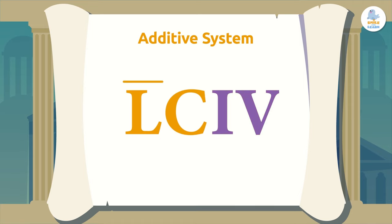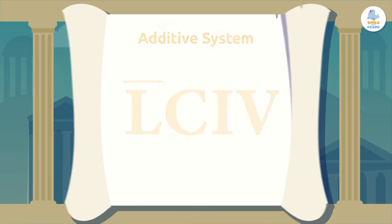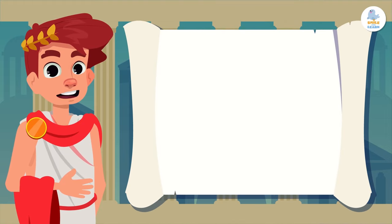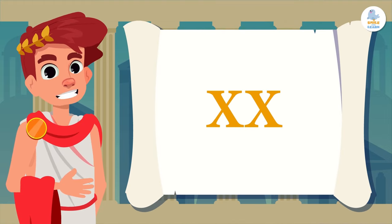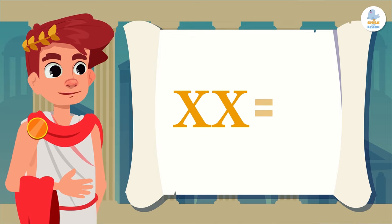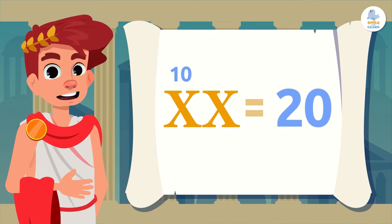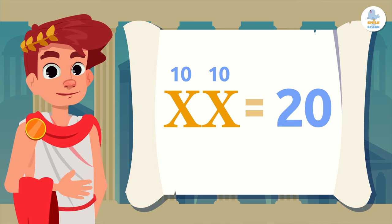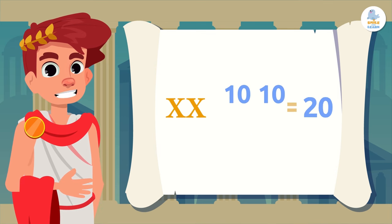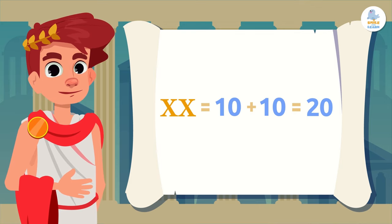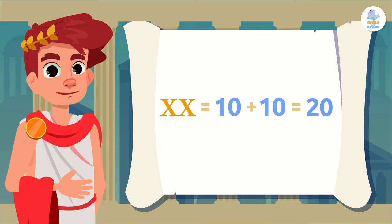But then the system changed a little to also include subtraction and multiplication. Let's look at some examples. In the Roman numbering system, two letter X's represent the number 20, since the letter X has a value of 10. So if we add two X's, it is like adding 10 plus 10 — this is how we get the number 20.